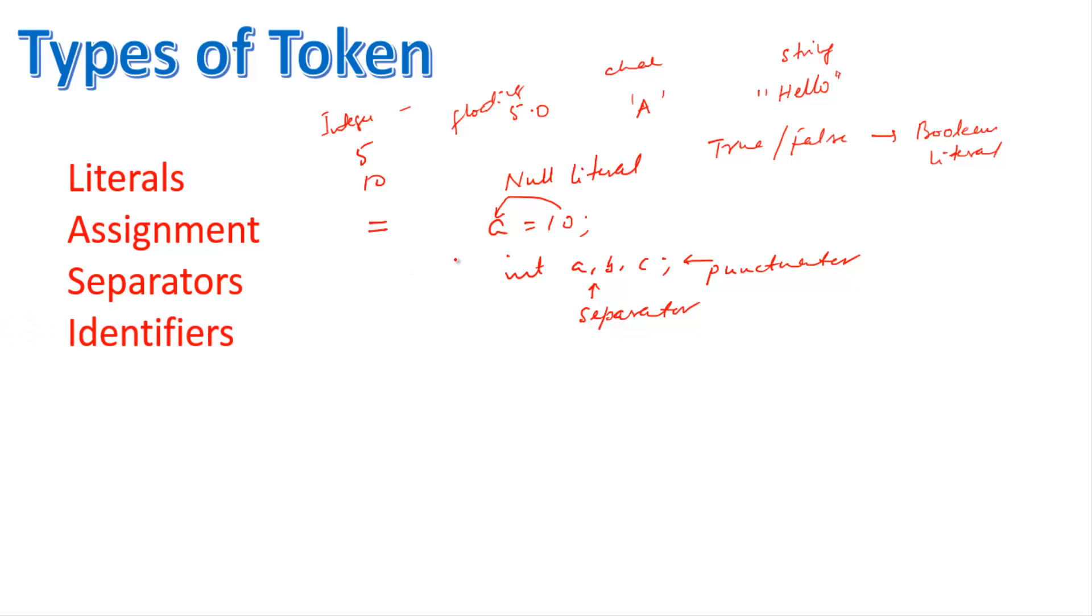Then comes identifier. As we told before, here a is an identifier, used as an identifier. Or you can say like a, b in a + 10, c. So these a, b, c are identifiers. Punctuator, as we said, semicolon here is a punctuator.